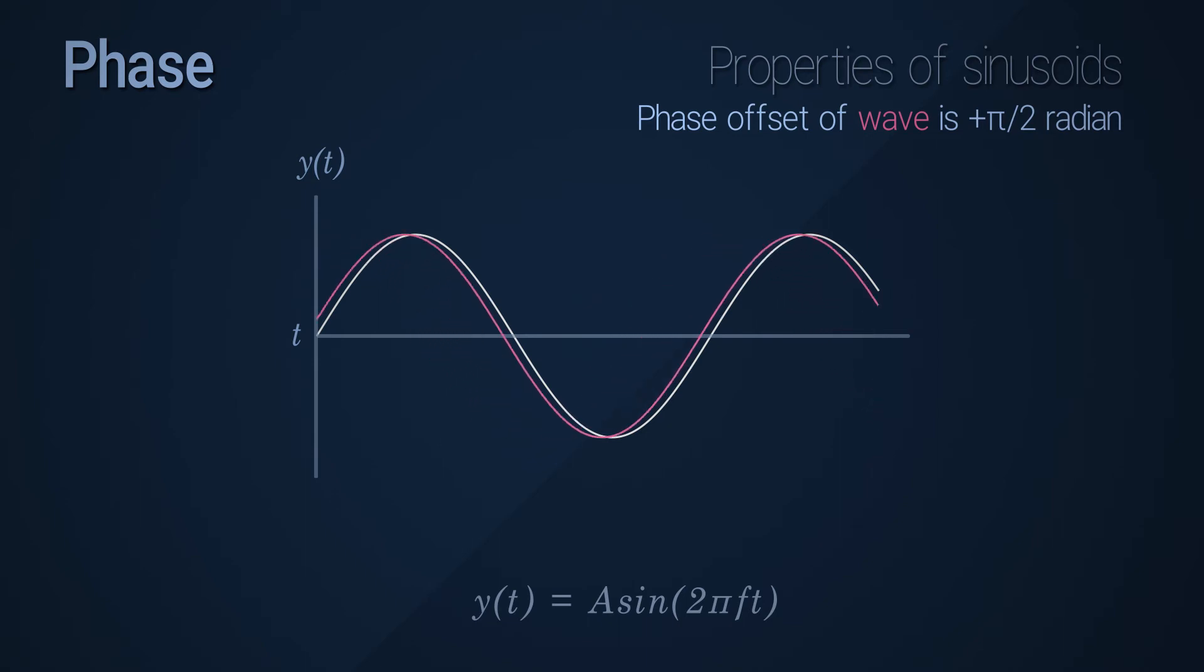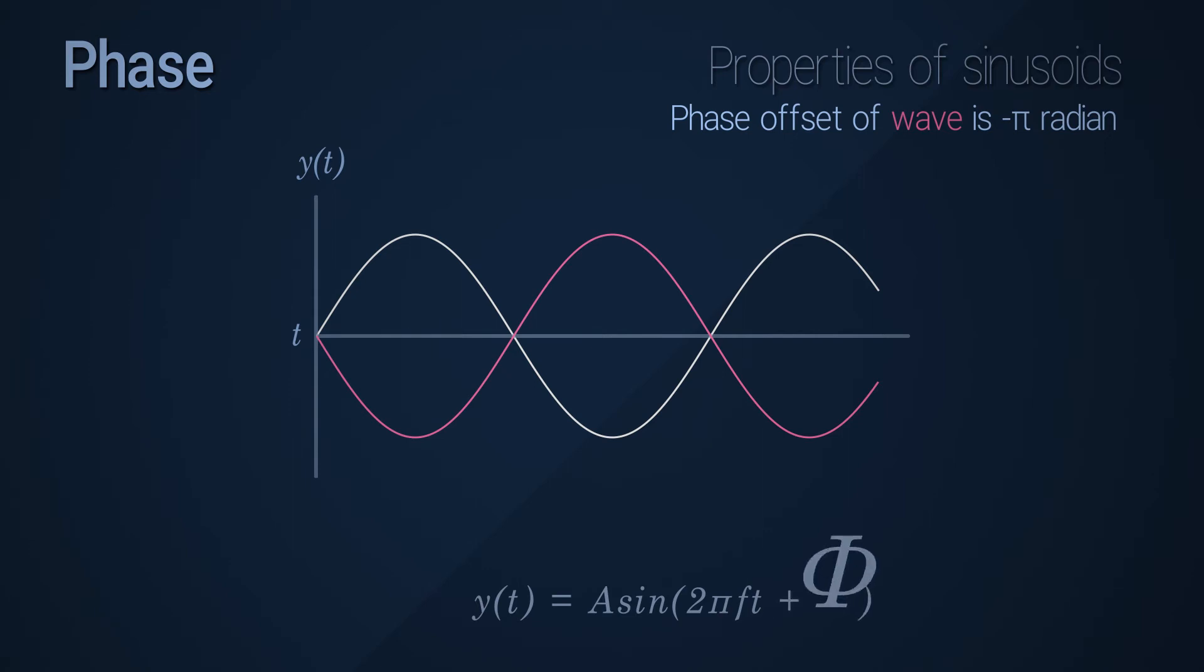Push the wave back by pi radian, and we can say that this wave has a phase offset of negative pi radian. We represent this shift by adding a phase value into our sinusoidal equation.